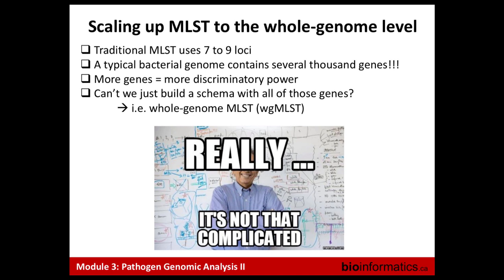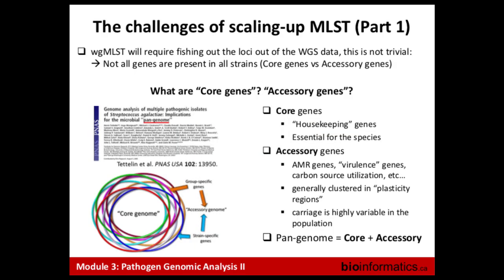But of course it's not that easy. The problem with scaling that up is you run into the concept of the pangenome, which Will talked about. The pangenome is the totality of all genes available to a bacterial species. There's no guarantee that any two strains within a species will share exactly the same genes. The pangenome is broken into two segments: the core genes, shared by all strains and definitional to the species — an expansion of the housekeeping gene concept — and the accessory genes, which are often adaptive and no two particular strains are guaranteed to share.